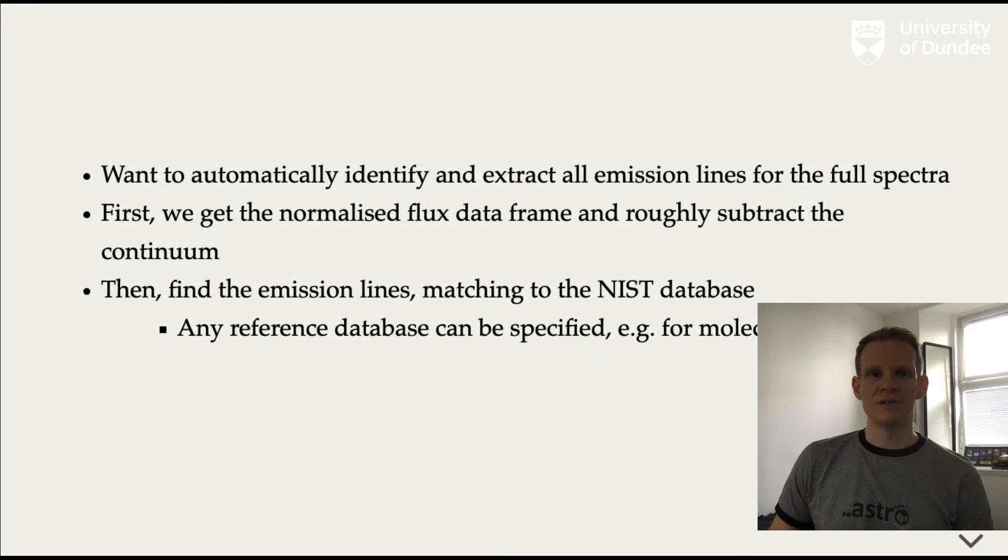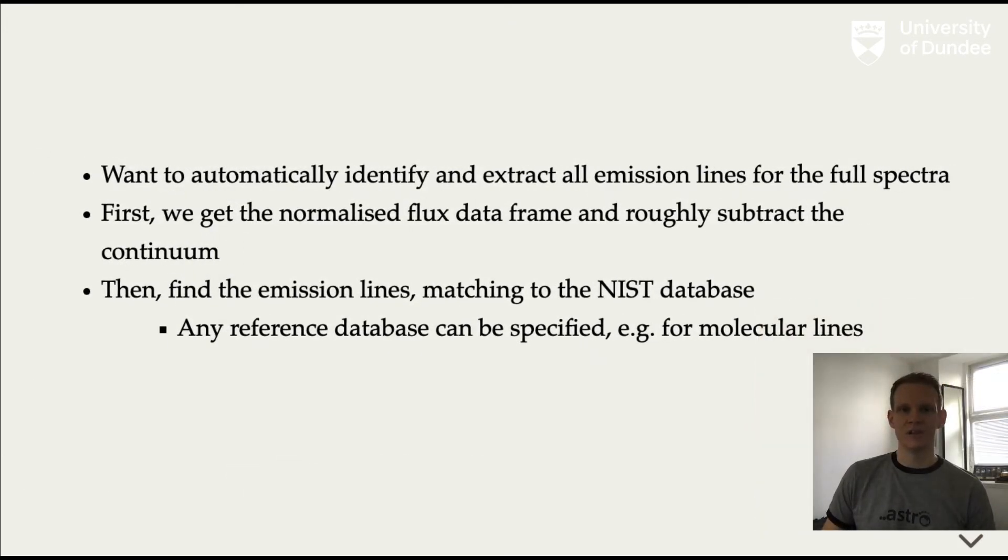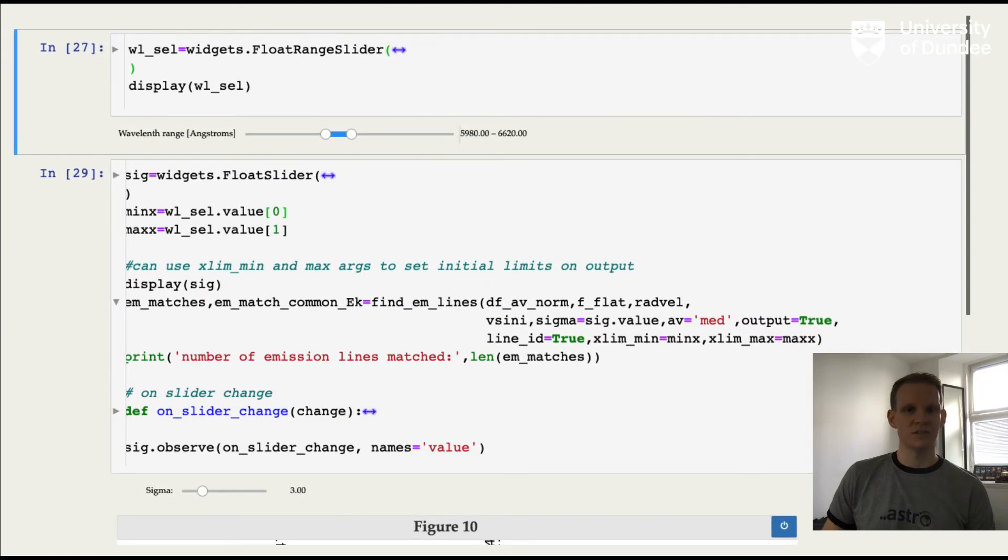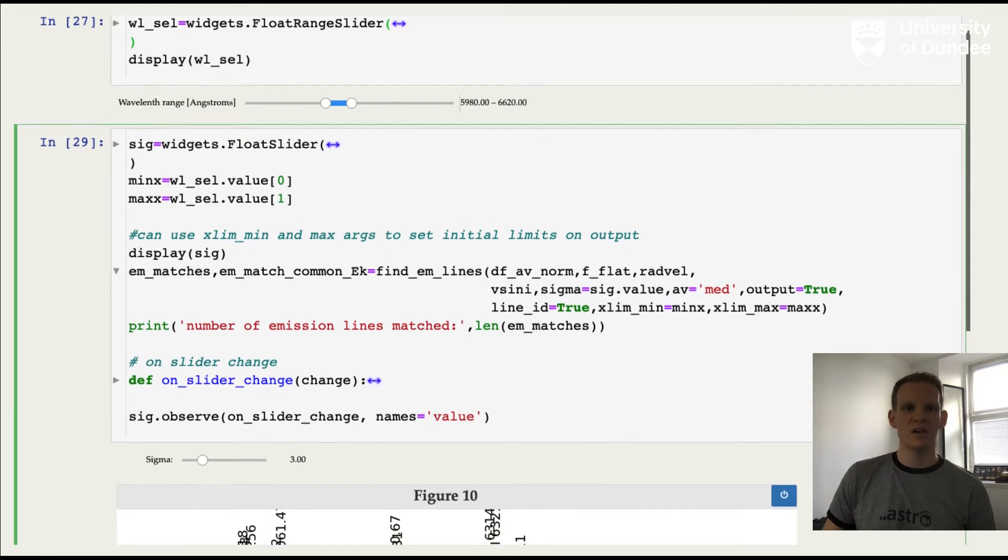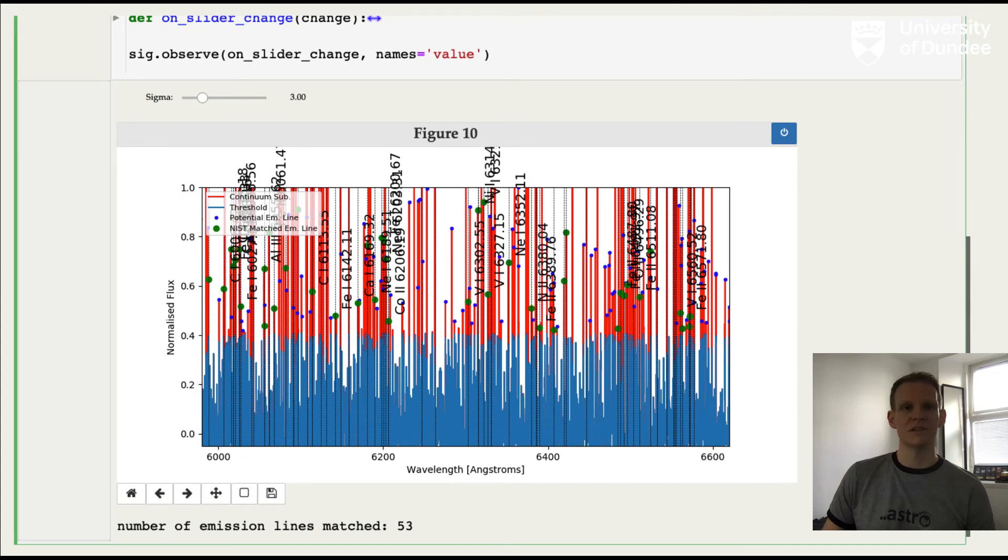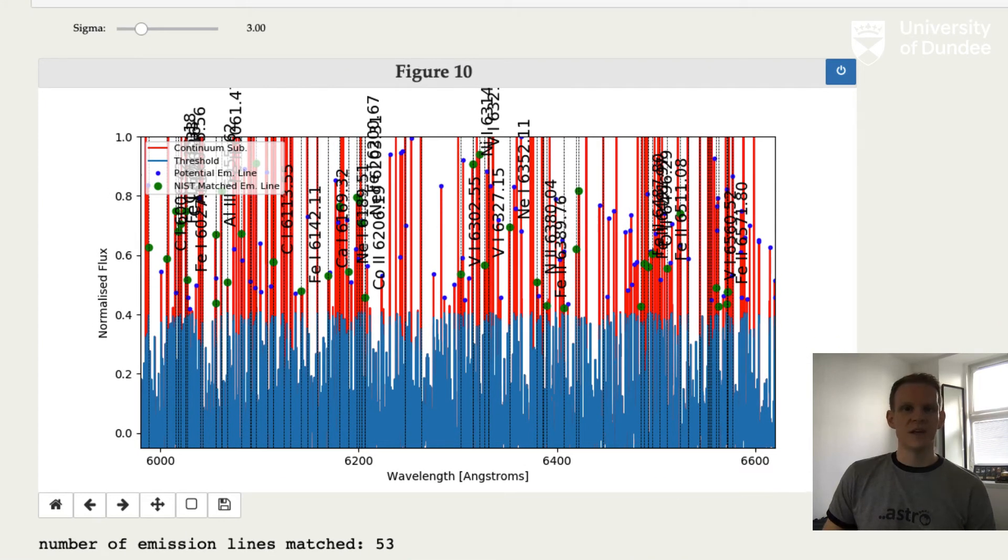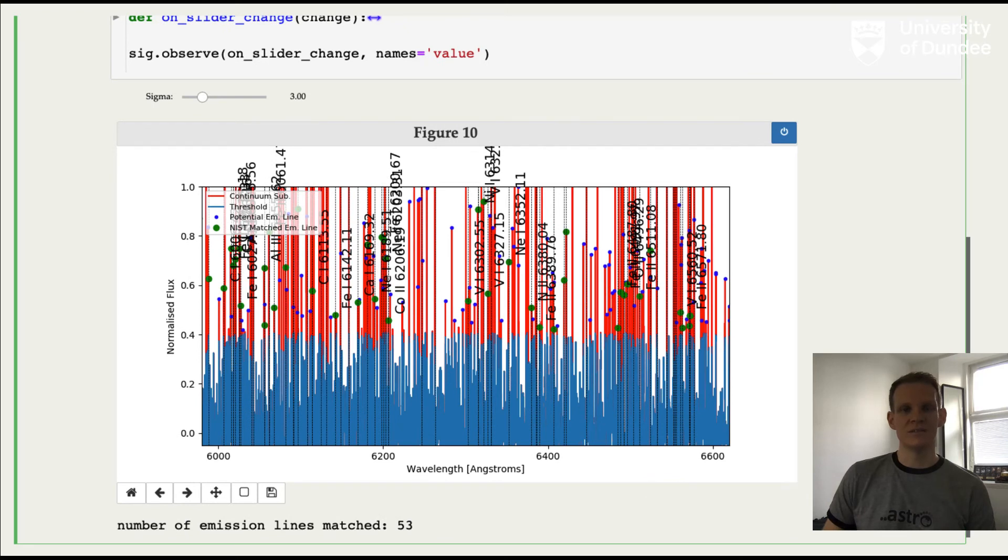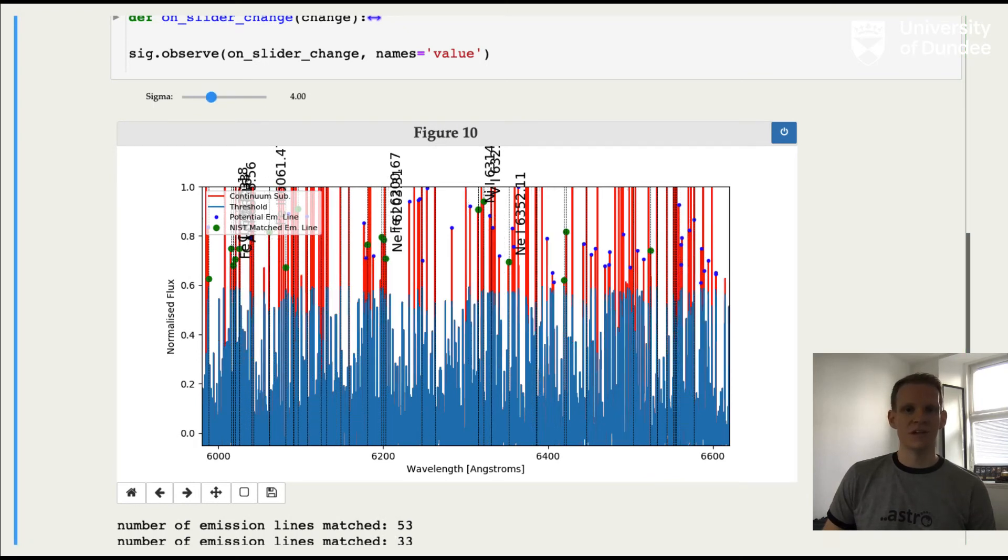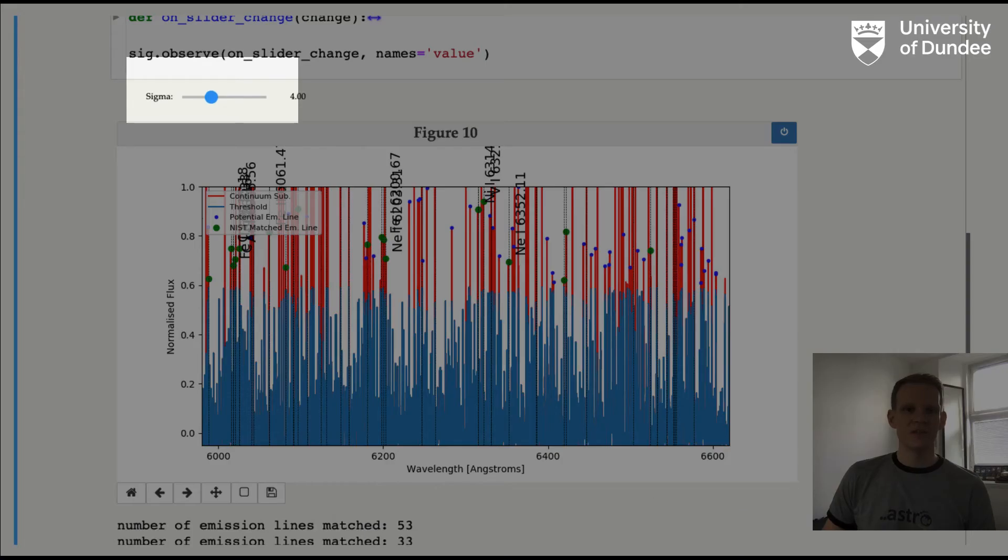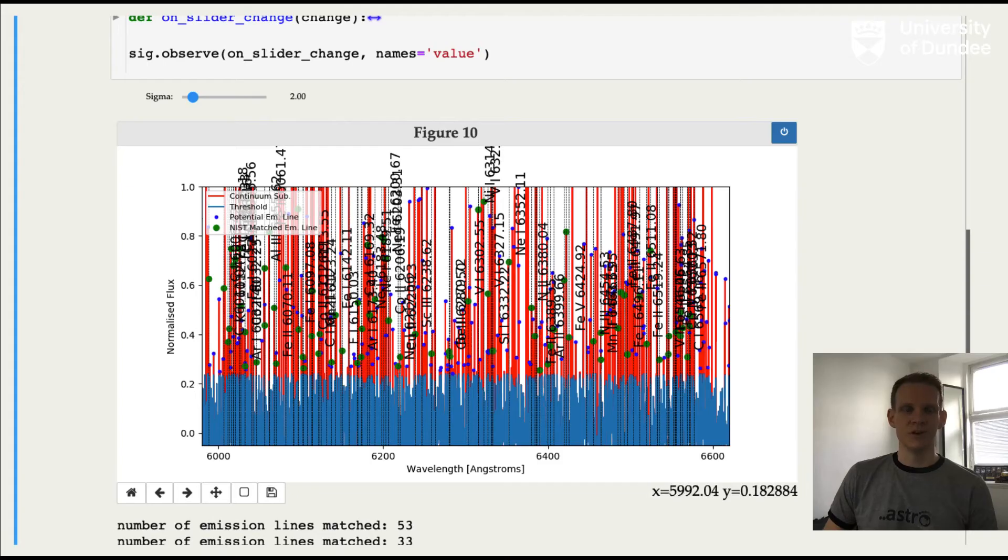Probably the most useful feature of StarMelt is being able to automatically identify and match all of the emission lines for a given spectra. Again, this doesn't have to be stellar spectrum. In our case it is, and we're using a database that's constructed from the NIST atomic line database as our reference, but you can provide any reference list of lines you like to StarMelt that will match your lines to. So here you see a subsection of the Pheros spectrum, and all of the emission lines above a given signal limit have been automatically identified. So the blue points there indicate an identified line, but the green points are those identified lines that have then been matched by their wavelength to the NIST database. So this also accounts for the radial velocity of the star. You can use this slider here to change the sigma limit of the threshold and the plot updates with the corresponding number of lines identified.